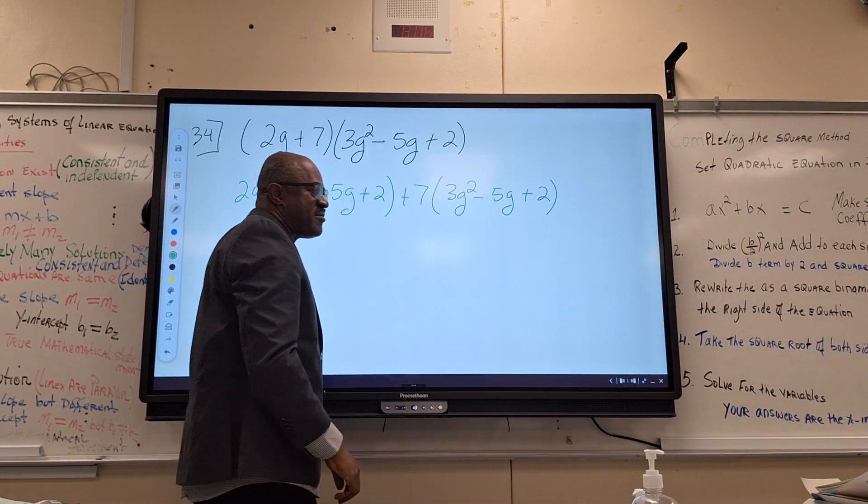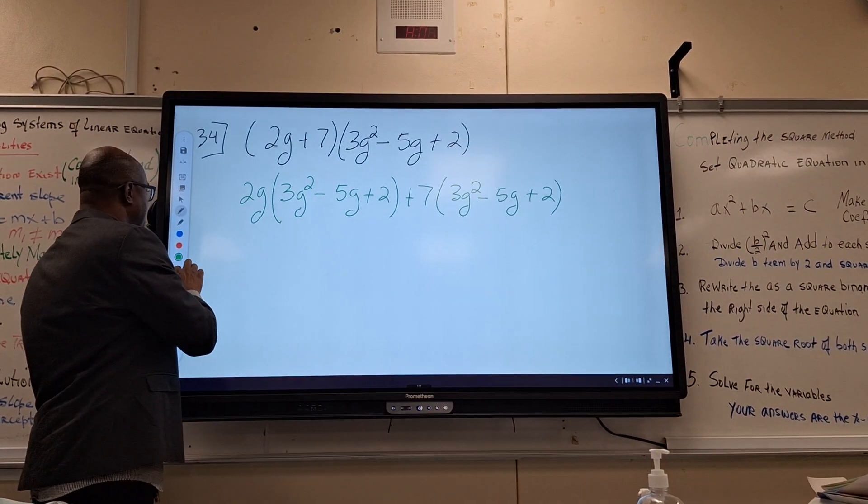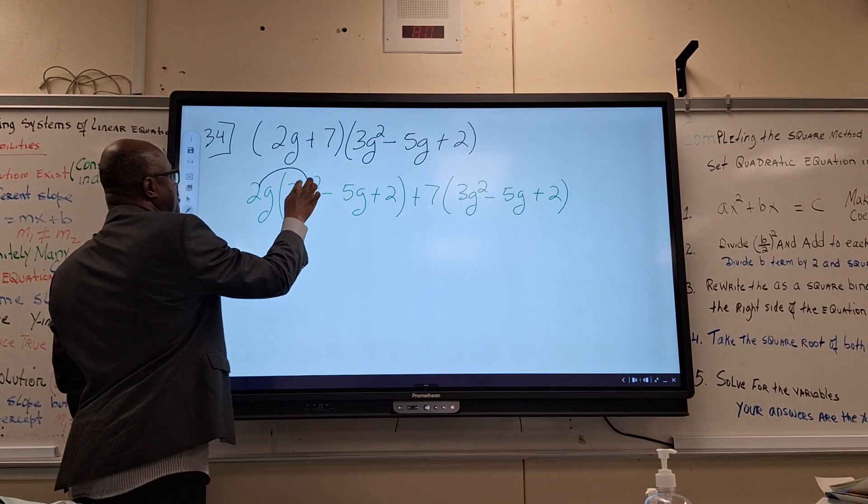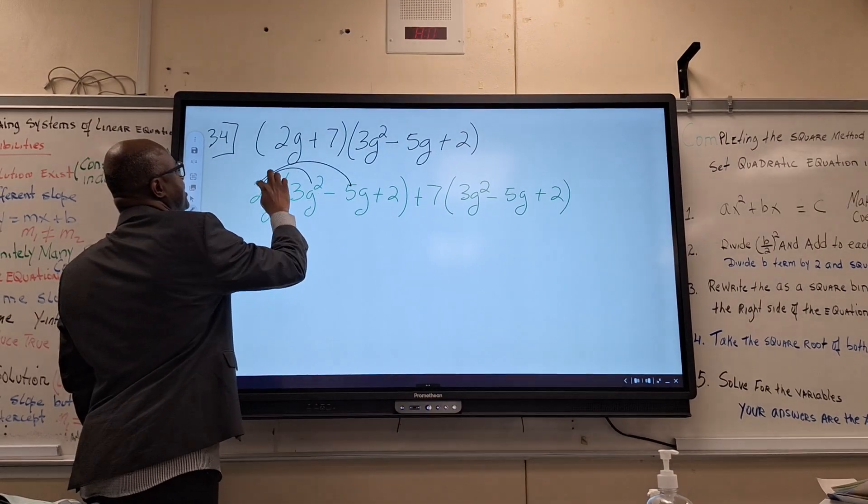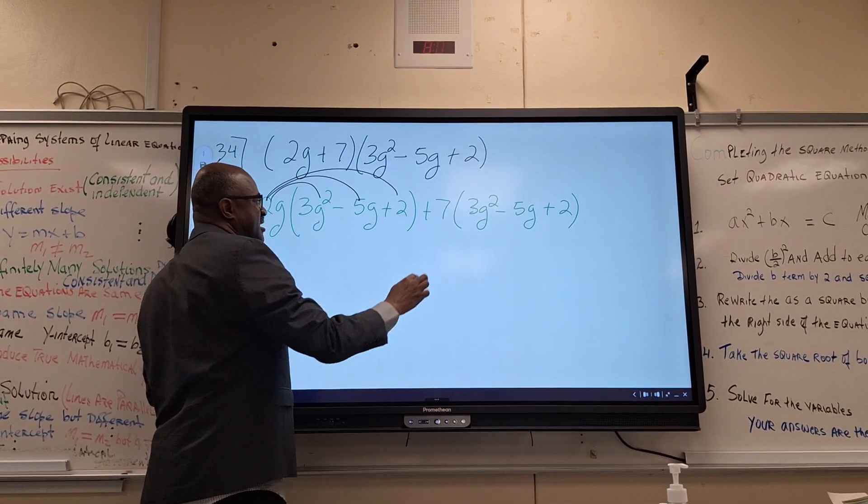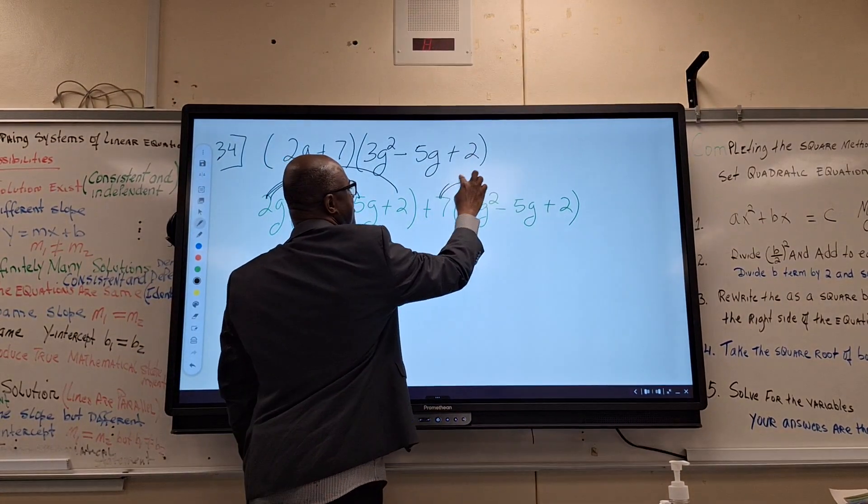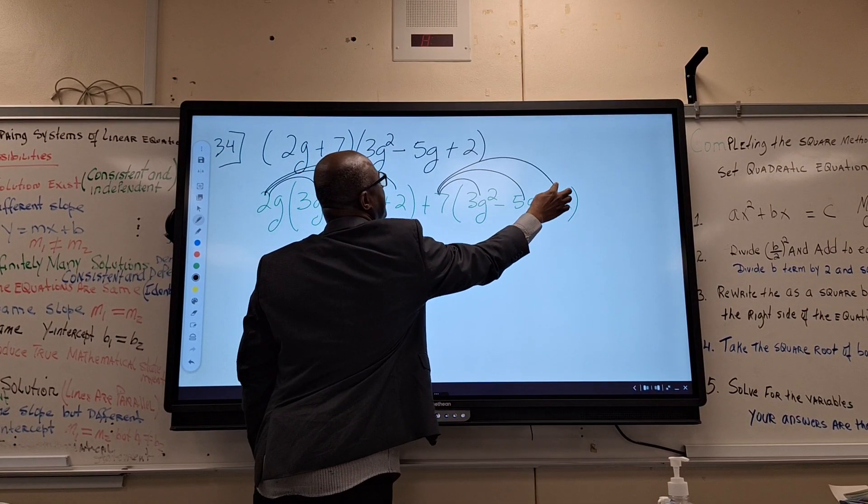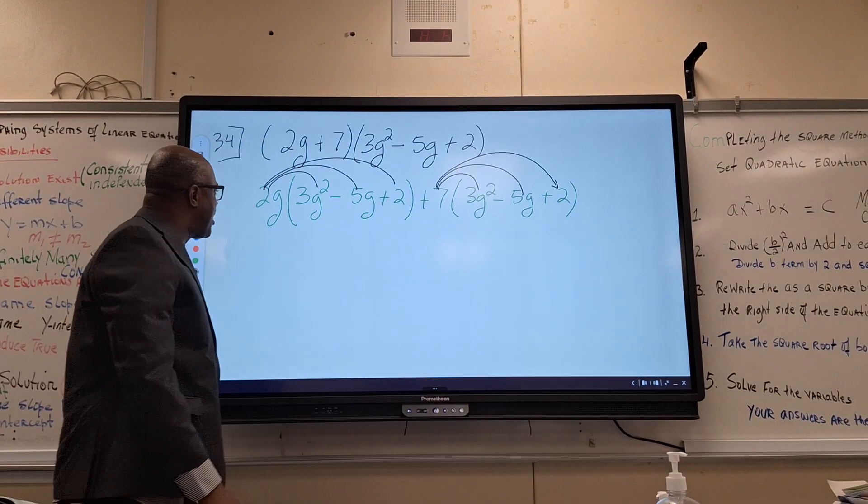Then you're going to use the distributive property. Meaning that I have to distribute the 2G by everything inside the parenthesis, and I have to distribute the 7 by everything inside the parenthesis. So what we end up with,